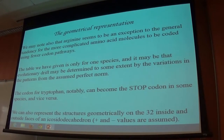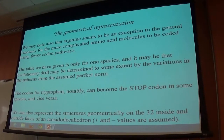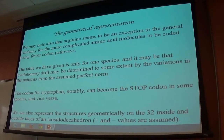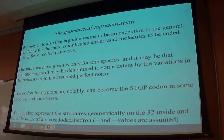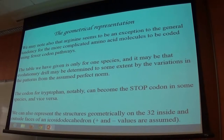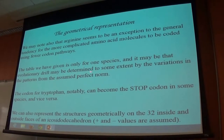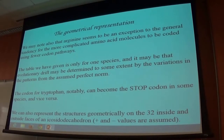Generally, you can notice a tendency that the more complicated the chemical structure of the amino acid, the fewer codon pathways it has — and that would be obvious, you'd expect more pathways for a less complicated molecule. Arginine is actually quite complex compared to some of the other amino acids, and that seems to be an exception to that rule. It may be that evolutionary drift may be determined to some extent, so we can use this to study evolutionary drift and other things of that kind.